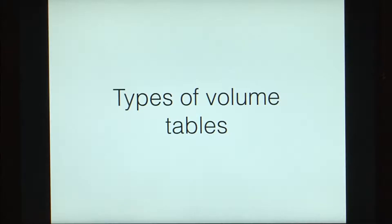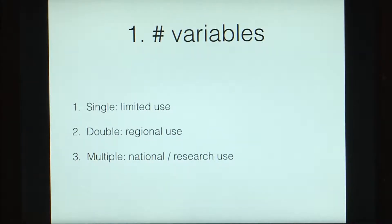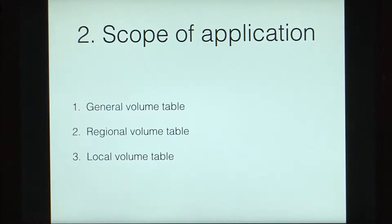Looking at the types of volume tables, the first classification is based on the number of variables. A single variable — say diameter at breast height — will have limited use. Two variables, say diameter and height, or diameter and form factor, will have more usage. Multiple variables — diameter, height, form factor, site quality and so on — might have much more usage, especially for research. As per the scope of application, you can have a general volume table, a local volume table, or a regional volume table.